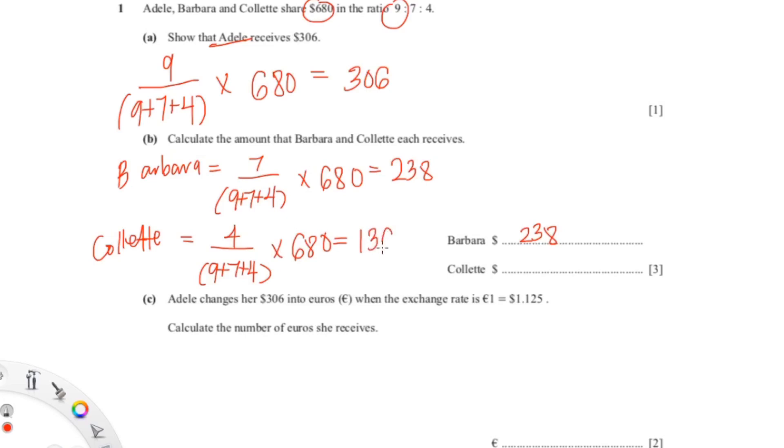So the next question is asking about exchange rate. We know that one euro equals 1.125 dollars, and Adele has 306 dollars but she wants to convert into euros. So we'll put euros as x. The exchange rate is 1.125 dollars equals one euro, so you do cross multiplication.